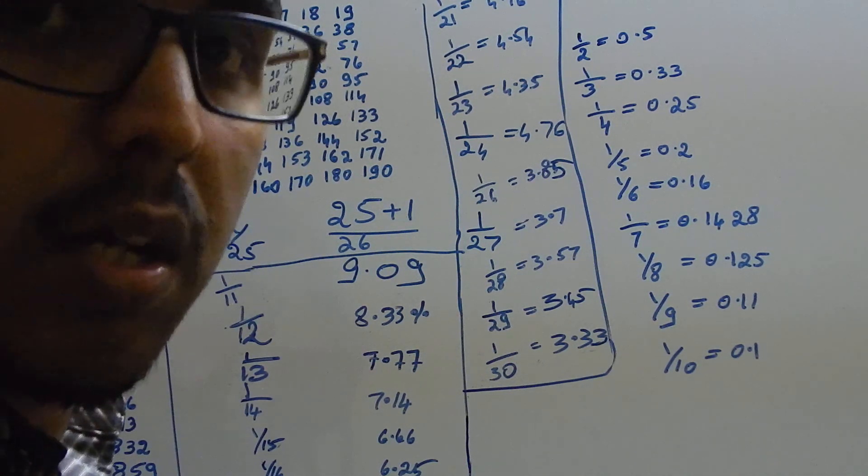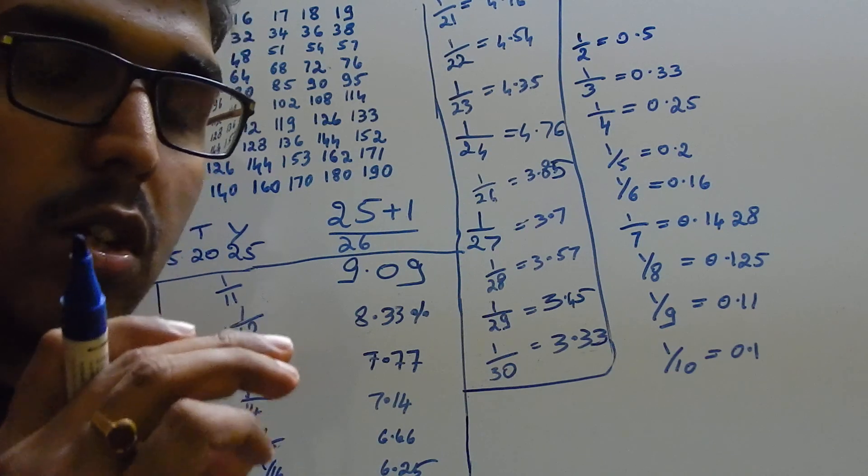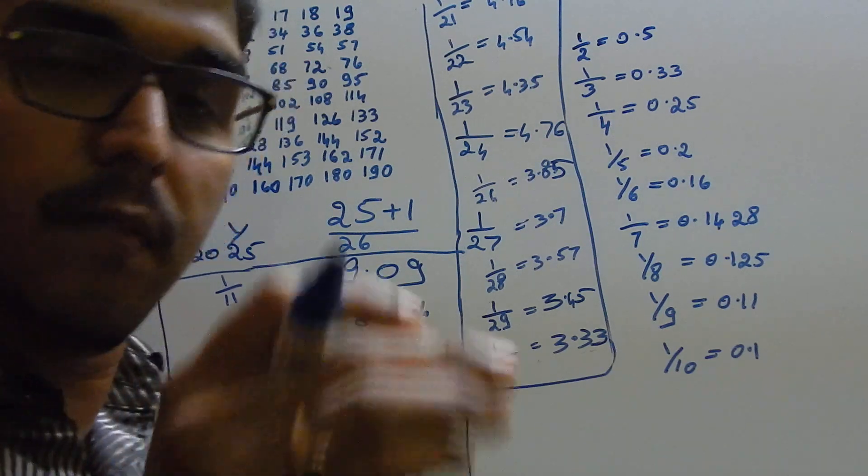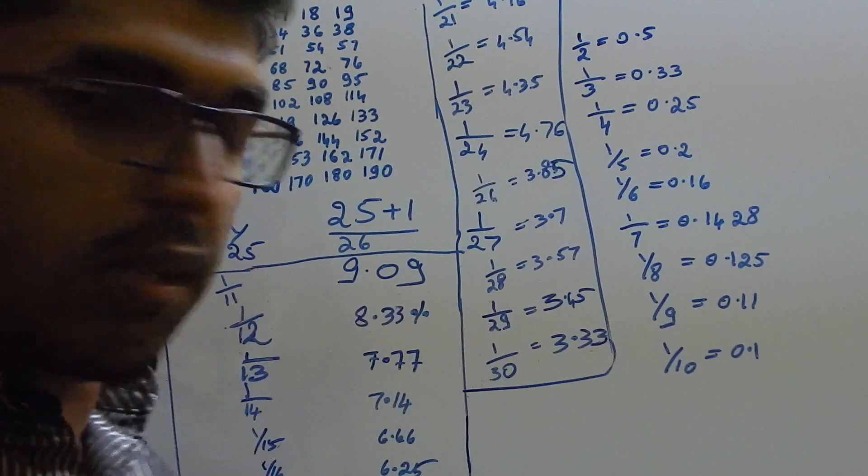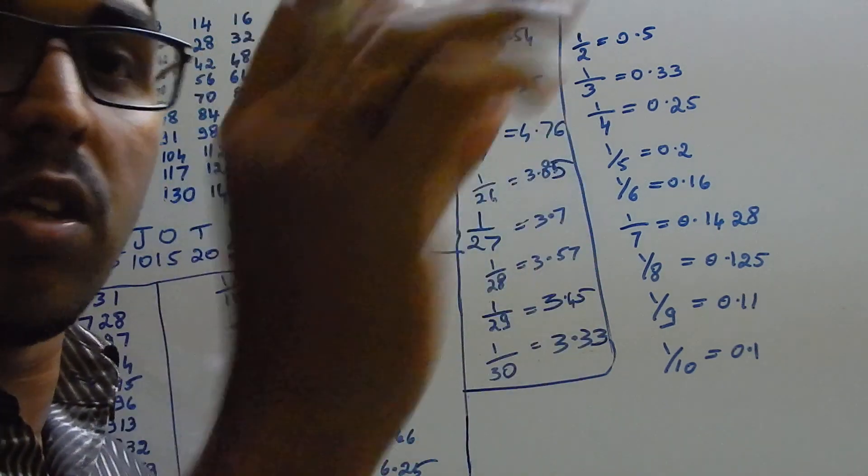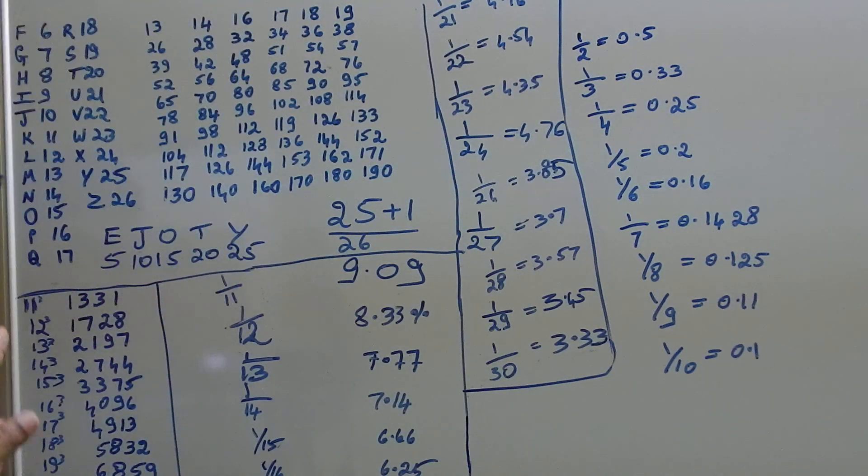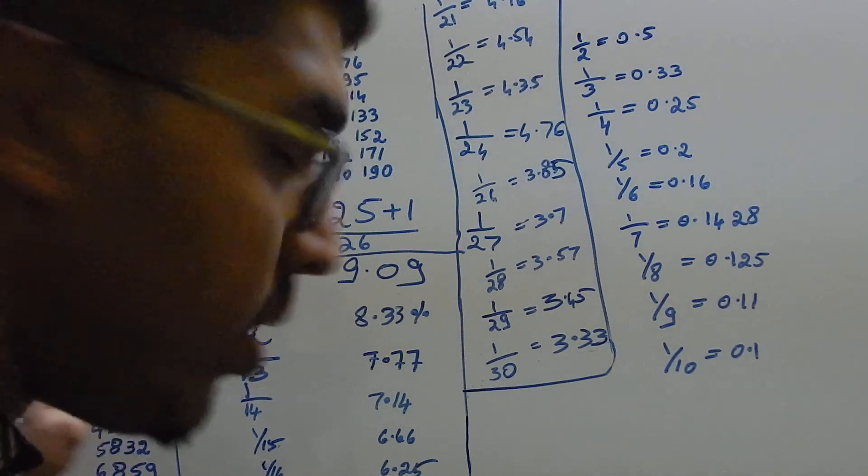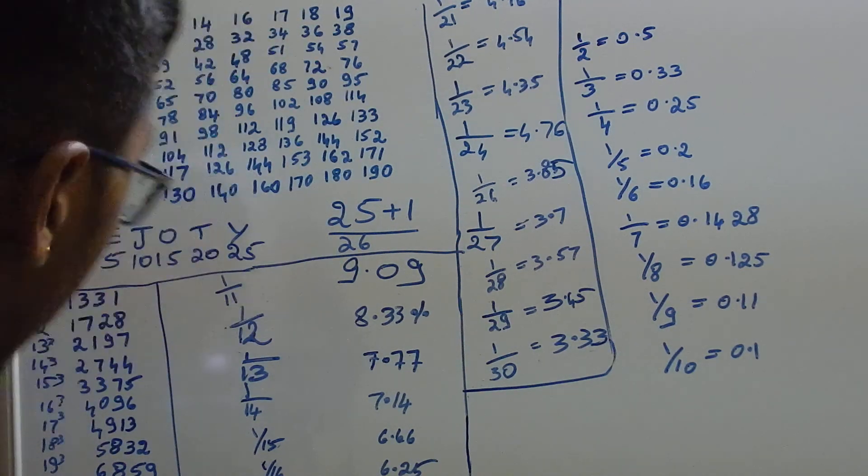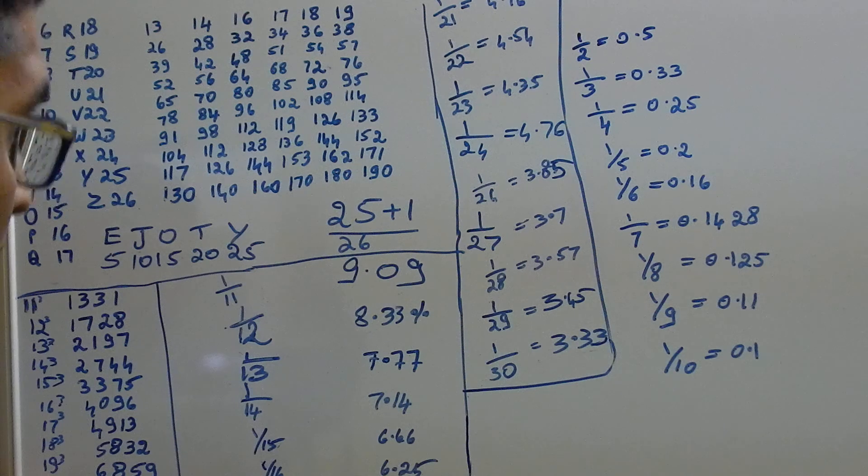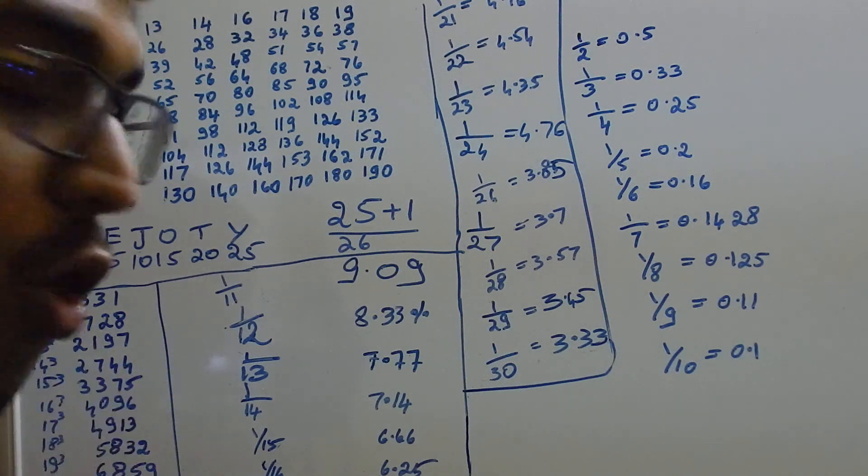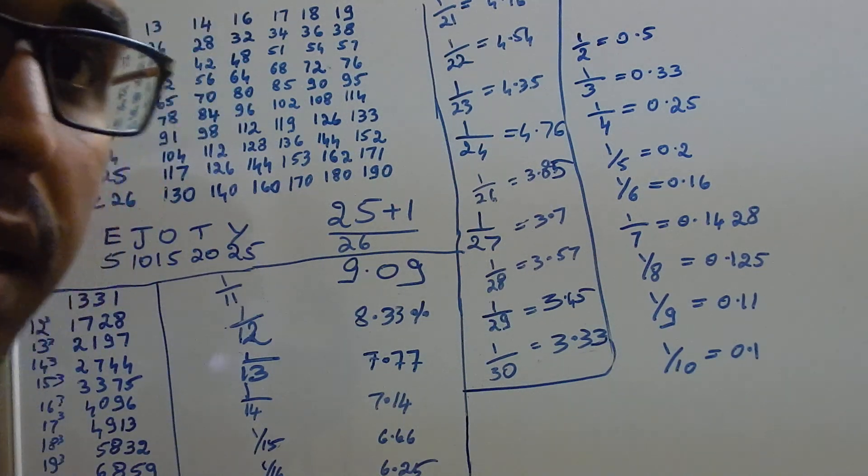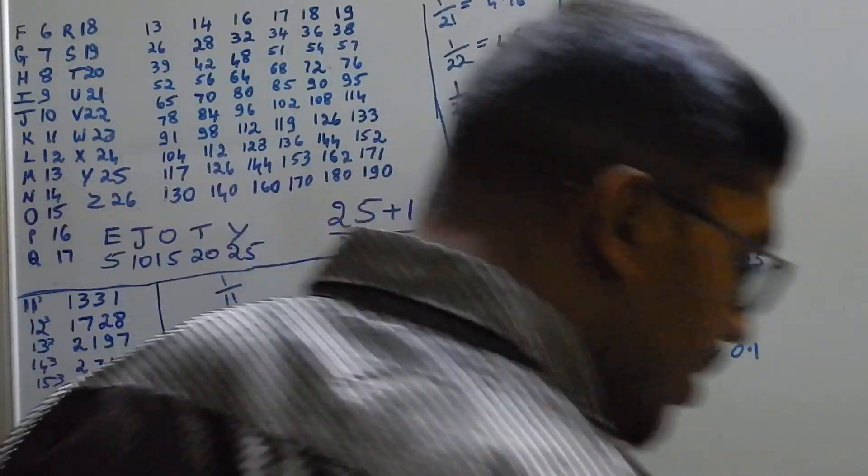You should be knowing the squares from 1 to 30 and cubes from 1 to 20. Here I have written the cubes from 11 to 19. What is the cube of 1?